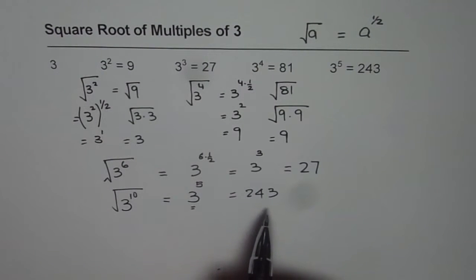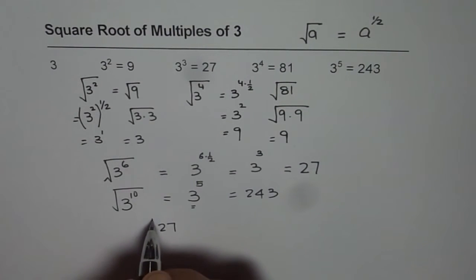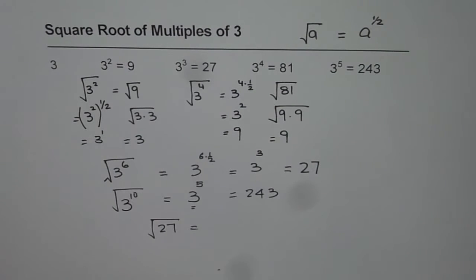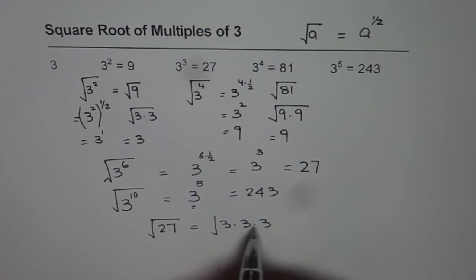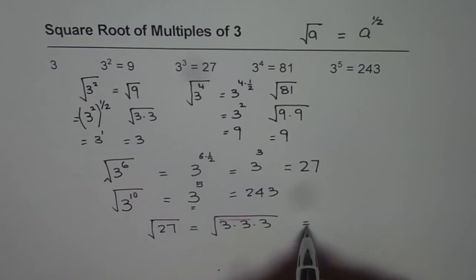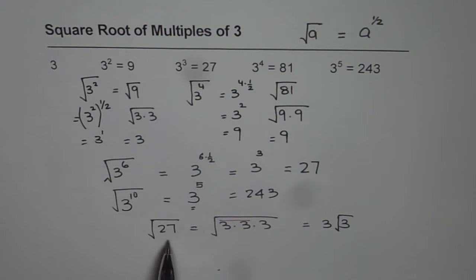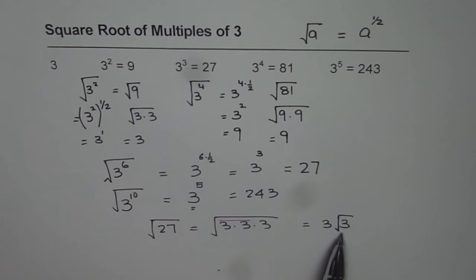Remember, when you do square root, it is not always the case that you will get a whole number. For example, what is the square root of 27? Now 27 is 3 to the power of 3, and half of 3 is not a whole number. What you can do is write 27 as 3 times 3 times 3. One pair of factors can be taken out, so we write it as 3 times the square root of 3. So at times, square root could be a rational or irrational number — in this case, square root of 3 is an irrational number. You may get a number that contains a square root itself.